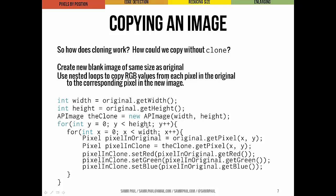We iterate through each pixel using nested loops. For each position, we get the pixel from the original — pixelInOriginal equals original.getPixel at x,y — then get the corresponding pixel in the clone, which is blank with default color values. Then we set the red value in the clone pixel to the red value in the original pixel using pixelInClone.setRed(pixelInOriginal.getRed()). We do the same for green and blue.